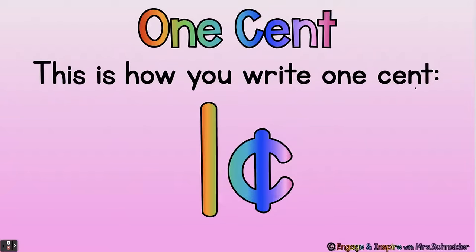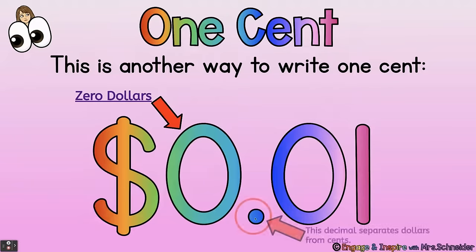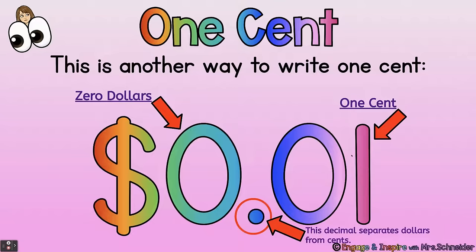This is how you write one cent: it's a one and then a C with a line. This is another way to write one cent — this is a dollar sign. You see dollar signs with one line or sometimes two lines down the middle. This means zero dollars, and then there's a decimal point which separates the dollars from the cents, and one cent. So zero dollars and one cent.